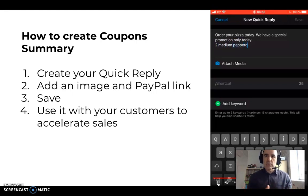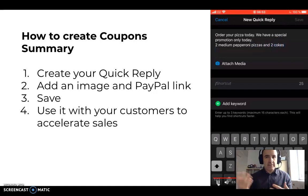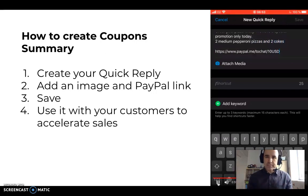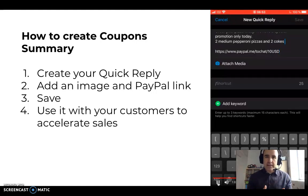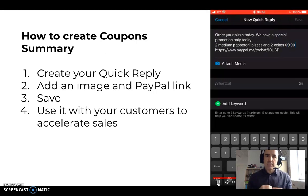For example, in the coupon that we are doing, we are going to make a special promotion for our customers: order your pizza today, we have a special promotion — two medium and two Cokes for just $9.99. Of course, we can add the PayPal link so customers can pay right away. You want to make business, you want to make money, so you need to create a coupon with a link.